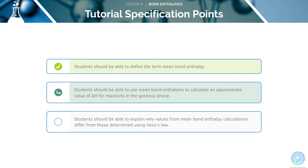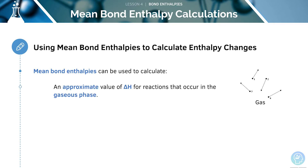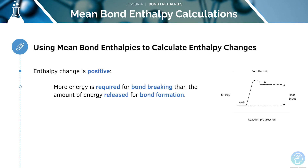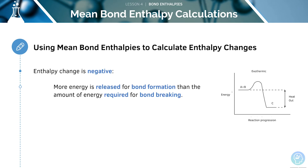Now let's move on to our next learning objective, covering the calculations of mean bond enthalpies. You should be able to use mean bond enthalpies to calculate an approximate value for delta H of reactions that occur in the gaseous phase. The enthalpy change will be positive if more energy is required to break bonds than the energy released when bonds are formed, and negative if more energy is released on formation than is required for bond breaking.